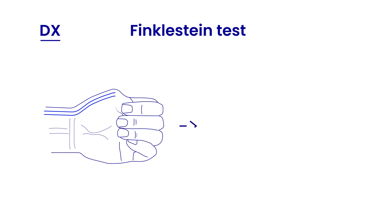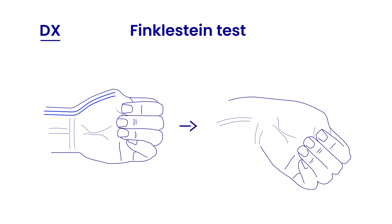You passively deviate the wrist. First, you adduct the thumb into the palm — the thumb is tucked in here — then you wrap the fingers around it. Once you wrap the fingers around the thumb, you passively deviate the wrist into ulnar deviation, and when you do that it provokes pain in the affected tendons. That's the Finkelstein test.